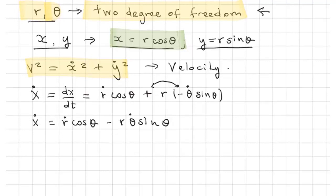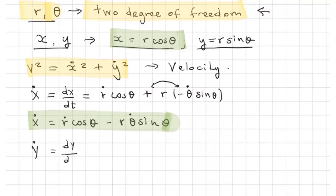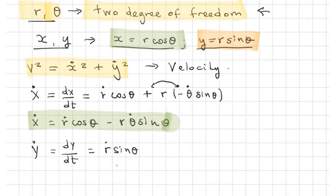We do the same with y_dot. y_dot is the derivative with respect to time of the position y. Using the product rule: the derivative of the first term r_dot multiplied by sine(theta), plus r multiplied by the derivative of sine(theta), which is theta_dot times cosine(theta). So y_dot equals r_dot·sin(theta) plus r·theta_dot·cos(theta).